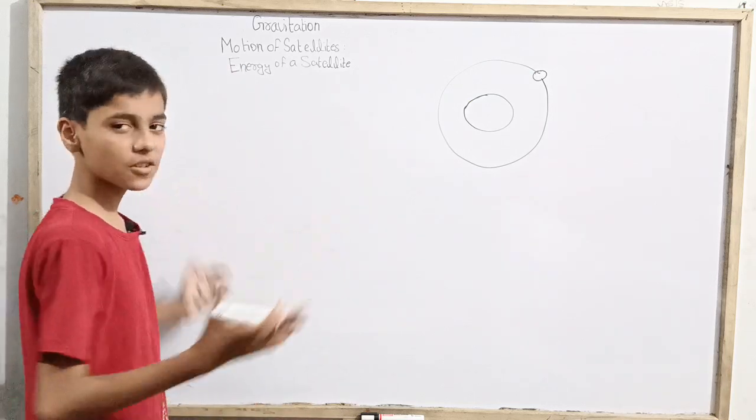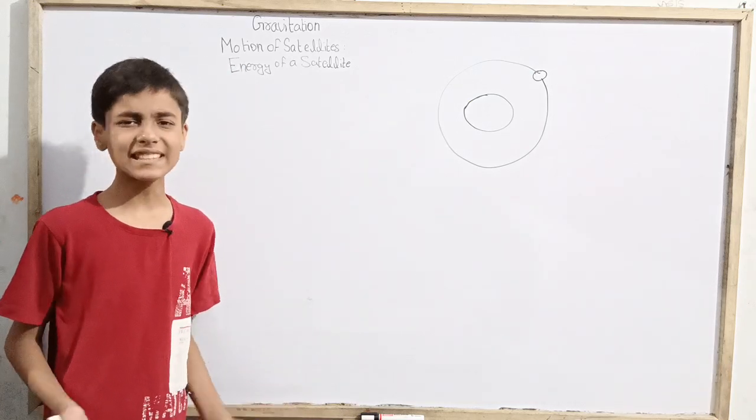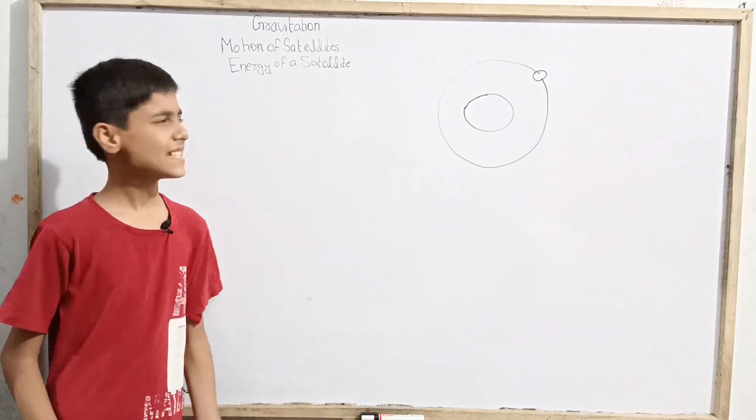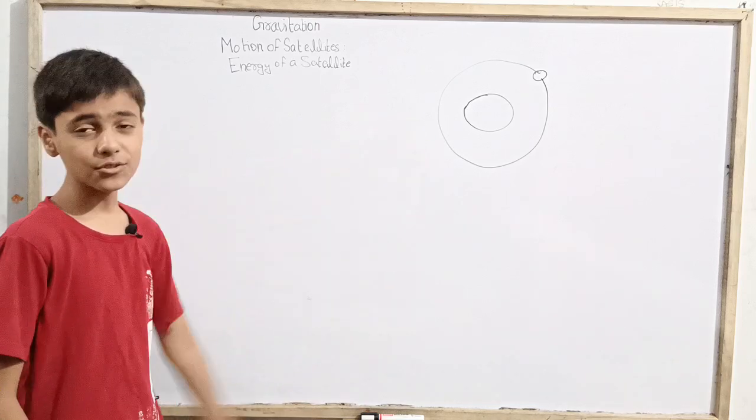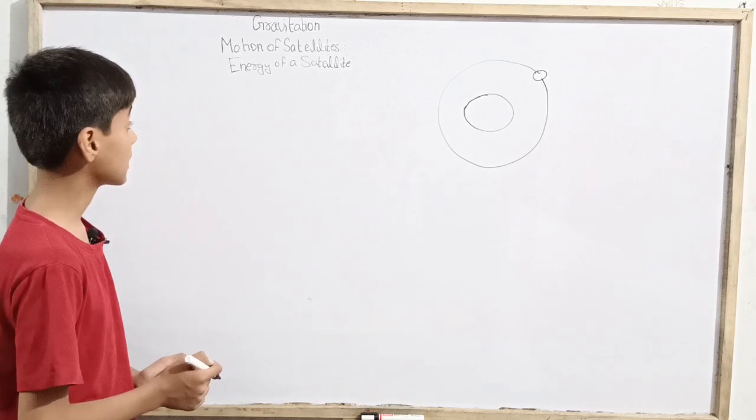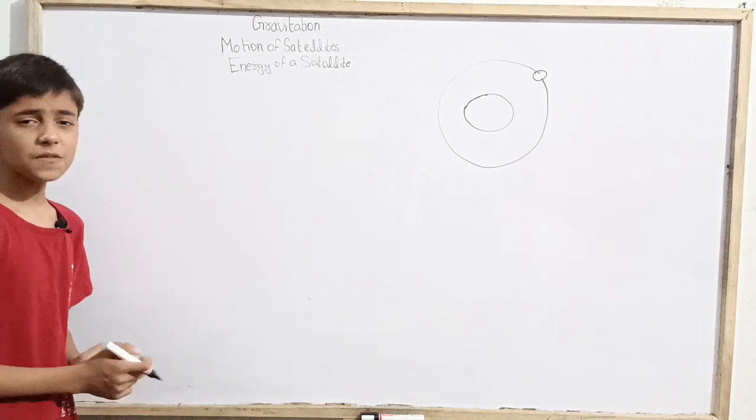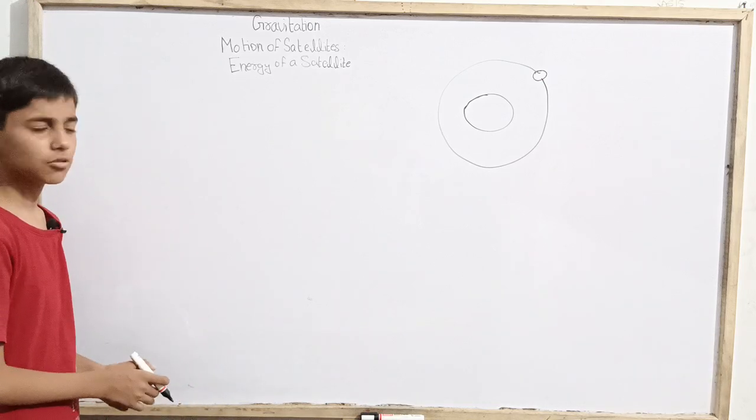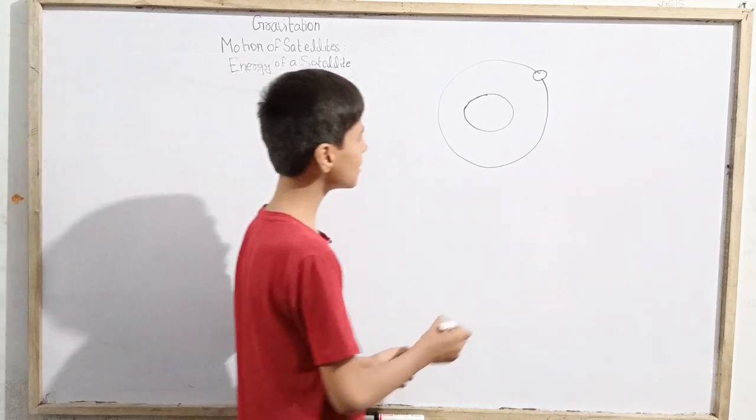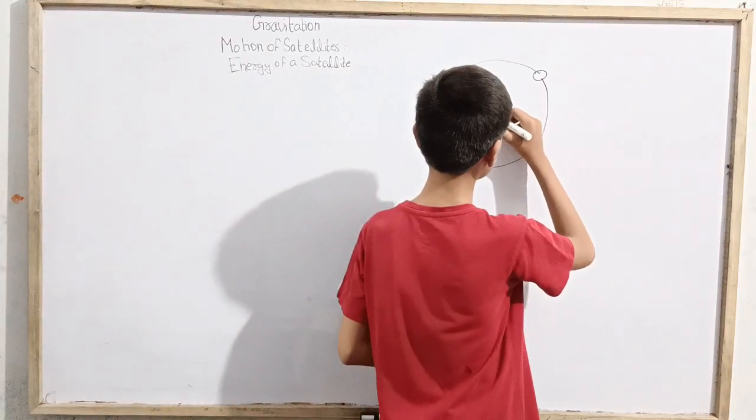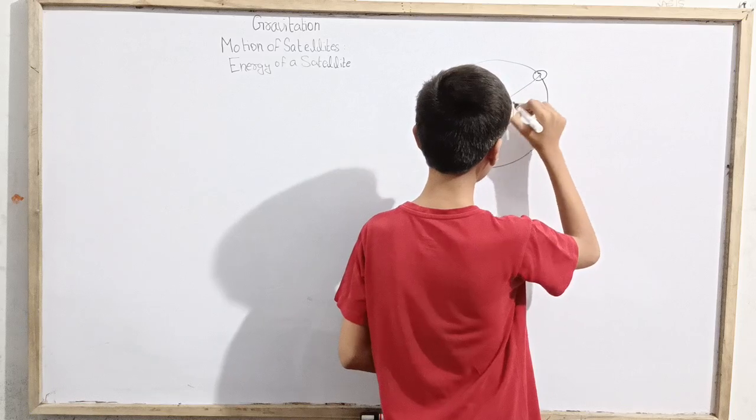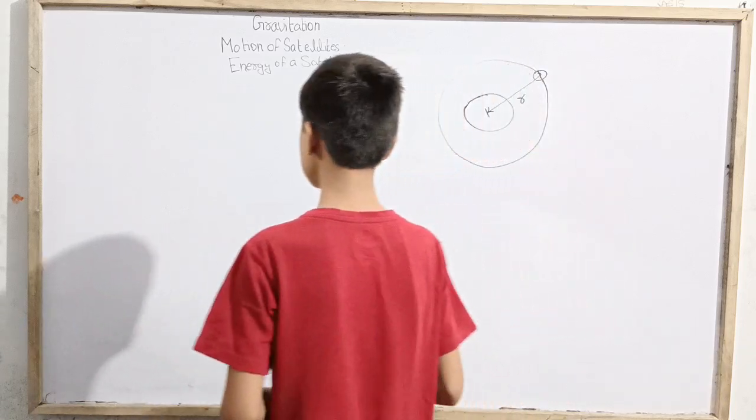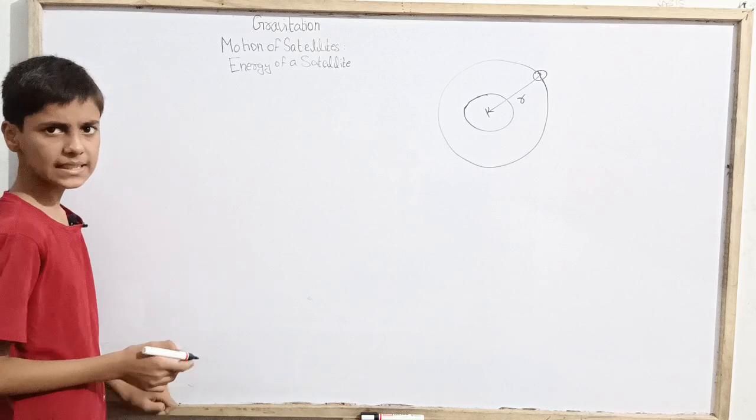Let's discuss the energy of a satellite. Energy of a satellite - what happens when it orbits some sort of planet, that is usually the Earth. So how much energy has it? The center separation is R between the planet and the satellite.